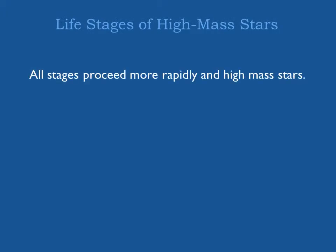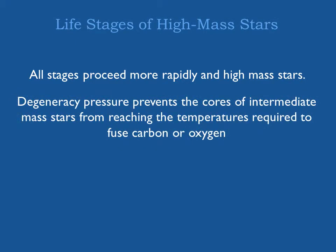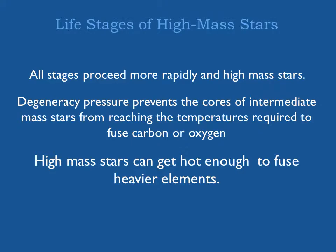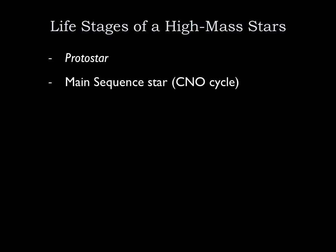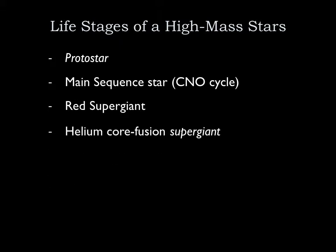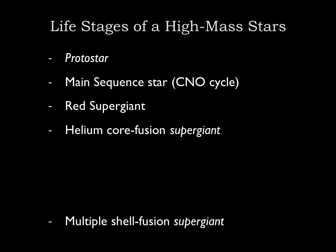All life stages proceed more rapidly in high-mass stars. Degeneracy pressure prevents intermediate-mass stars from reaching the temperatures required to fuse carbon or oxygen, but high-mass stars can get hot enough to fuse heavier elements. To summarize: a high-mass star goes from protostar to a hot main-sequence star fusing hydrogen via the CNO cycle, then becomes a red supergiant. After helium is exhausted, the core shrinks and heats up, eventually fusing carbon and even heavier elements, sustaining multiple-shell fusion instead of just double-shell burning.